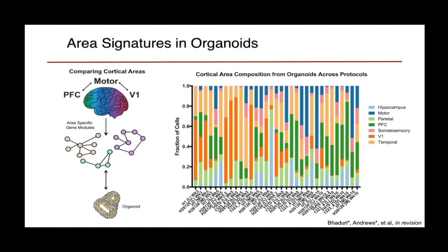We also explored how this manifests in terms of areal identity. Using network analysis to identify areas from our primary data and applying them to the organoid, we found that organoid cells do recapitulate areal identity, but they are not spatially segregated. An individual organoid will have strong heterogeneity of areal identity within a single organoid, and cells next to one another from the same organoid may correspond to different areal identities. This is consistent with our thinking that areal identity may be a core feature of differentiation preserved in the organoid, but they lack the signaling and organizational centers that would dictate spatial organization of these areas.